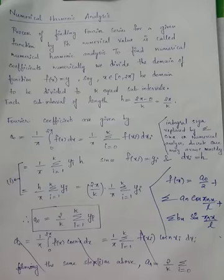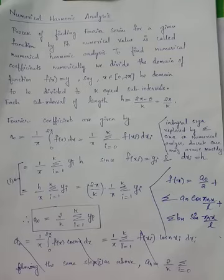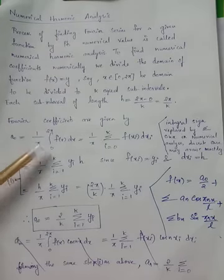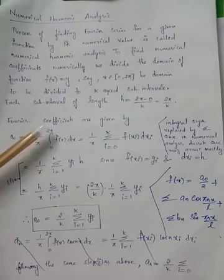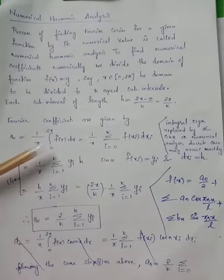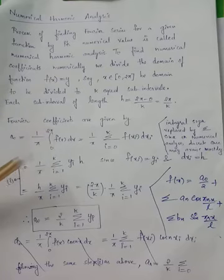Since we are not dealing with a continuous case — because the numerical data corresponds to discrete points — we cannot make use of the integral sign to evaluate the Fourier coefficients. So instead of a₀ = (1/π)∫₀²π f(x)dx, we replace the integral sign by a summation sign and split the domain 0 to 2π into equal-length sub-intervals.